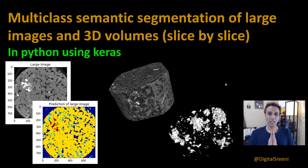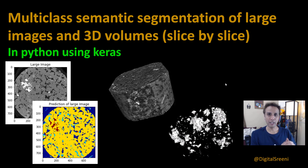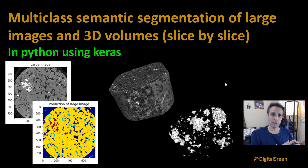Hey guys, this is Srini and welcome back. Please go ahead and hit the subscribe and like button. I hope you watched my previous video about multi-class semantic segmentation using UNet where we obtained a trained model. Now let's use that trained model to segment large images by dividing them into smaller patches, putting them together, and automate that for multiple images.